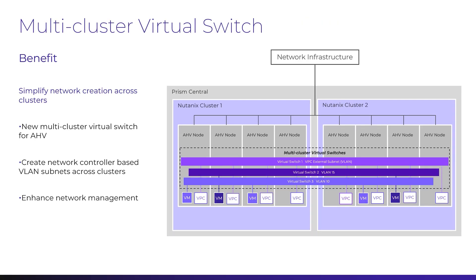With this release, the new multi-cluster virtual switch functionality for AHV is available in PRISM Central. This multi-cluster virtual switch simplifies network creation across multiple clusters. It helps provide a more seamless approach to distributing VMs across clusters and even reduces the potential for IP conflicts by managing the subnet across all clusters.